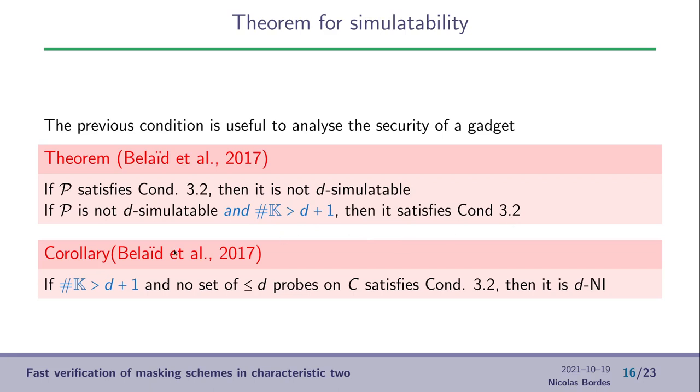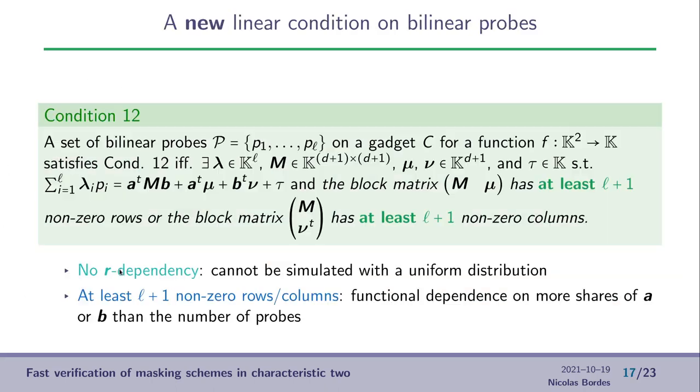As a corollary, if the size of the finite field is sufficiently big, then if no set of less than d probes in C satisfies the condition, then we are sure that it is d-NI. From this corollary, we can have a direct algorithm to check the d-NI property of a given gadget. The problem here is that if we want to check the gadgets that work on F2, then this constraint is not met, and then we can't use this theorem and corollary.